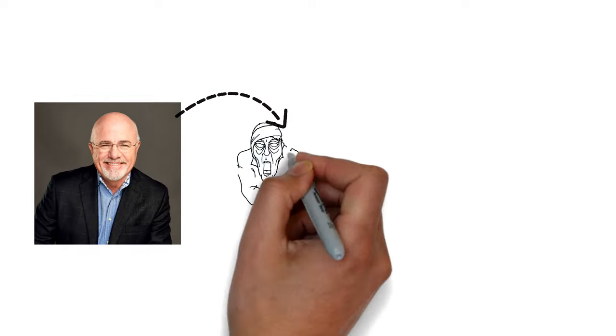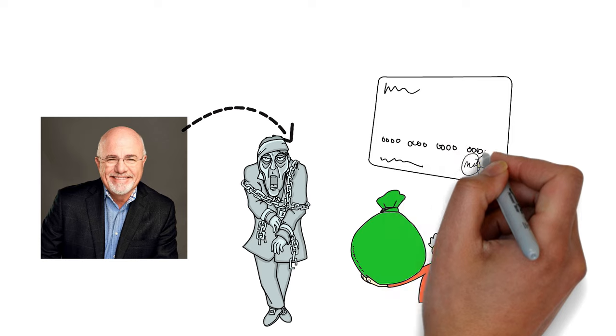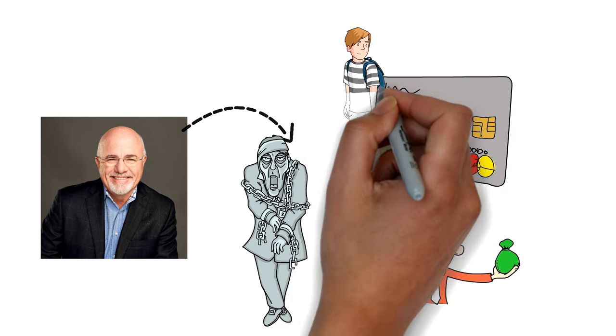One thing Dave Ramsey frowns at is debt. He calls it slavery. You'll never be rich if you keep calling short on credit cards or student loans. Settle these things before you even think of saving or investing.